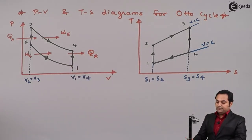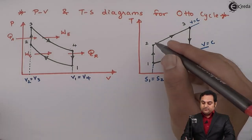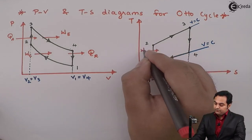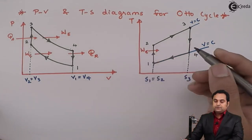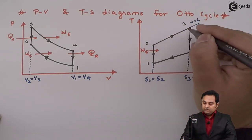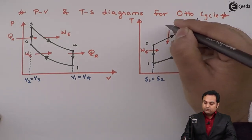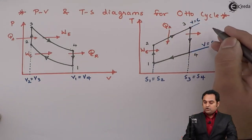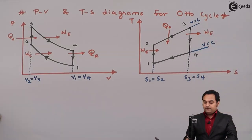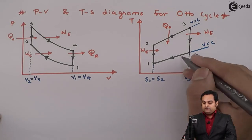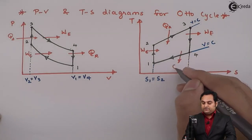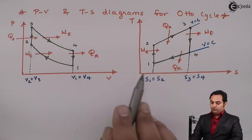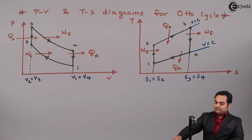To summarize the processes: from one to two there is compression, so Wc is the work input during compression. From two to three, heat is added at constant volume, denoted Qa. From three to four there is work output during expansion, denoted We. From four to one, heat is rejected out of the air. This completes the PV and TS diagram for the Otto cycle.